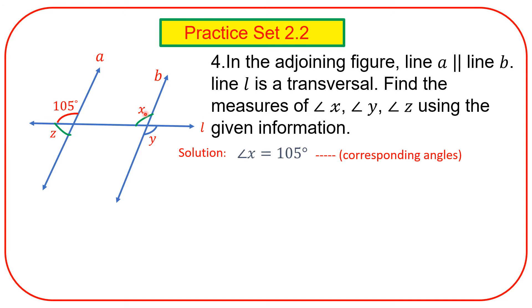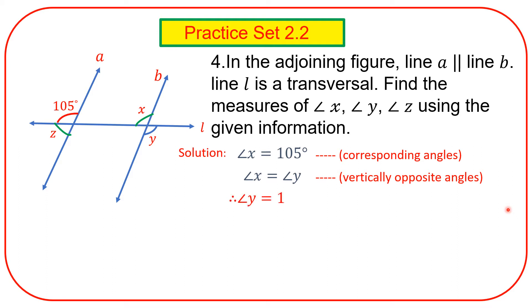Angle X is equal to angle Y — vertically opposite angles. Therefore, angle Y is equal to one hundred and five degrees.